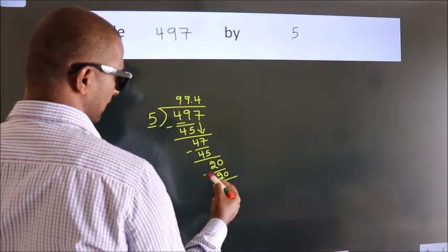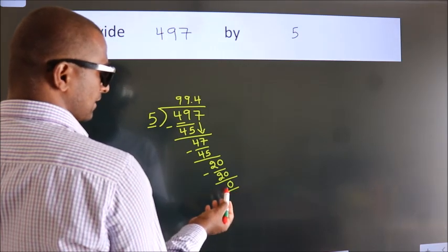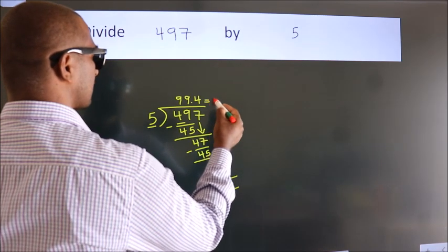Now we subtract. We get 0. We got remainder 0, so this is our quotient.